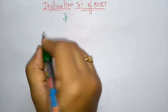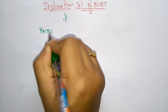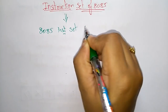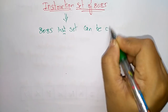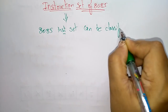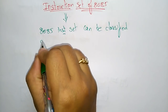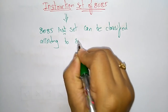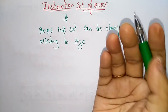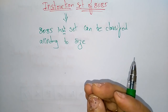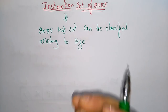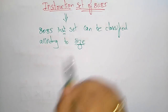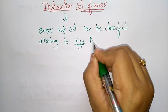The 8085 instruction set can be classified according to size. Whatever instruction you are storing in the 8085 microprocessor has to be designed according to the size of that instruction. The size is always in bytes.